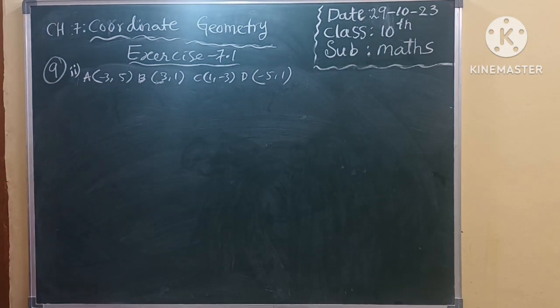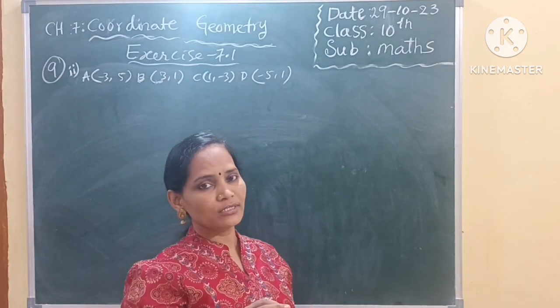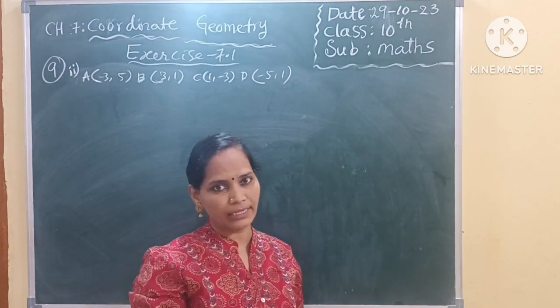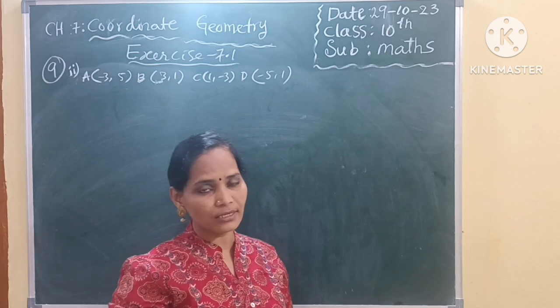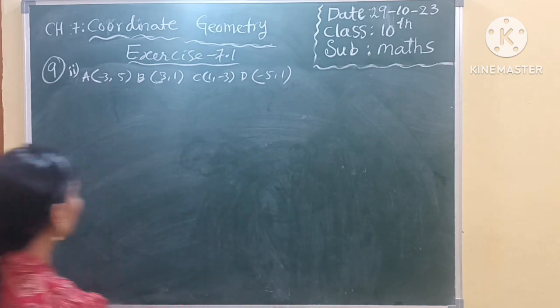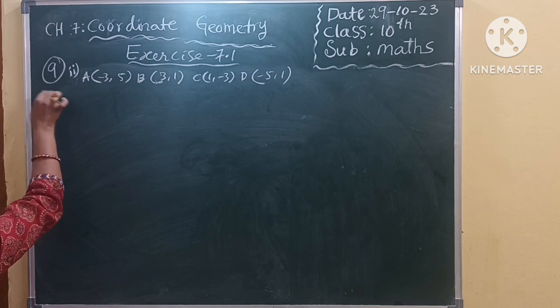Now I am finding the distance between any 2 points. So AB, BC, CD, DA and also diagonals AC and BD I am going to find. Let us see. AB distance.